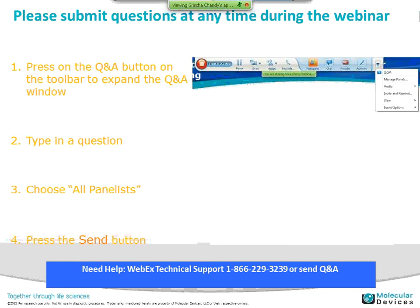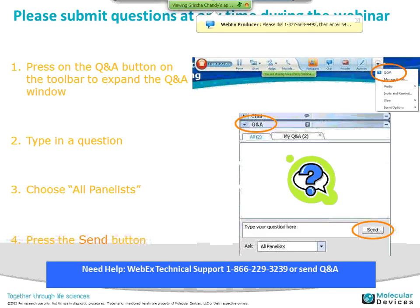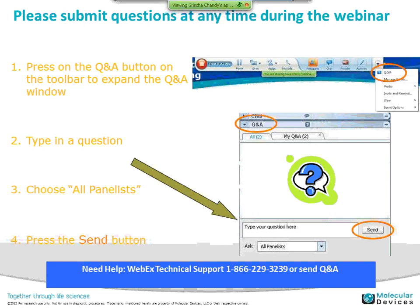How do you do Q&As? There should be a Q&A button on the toolbar at the top of your window. Select that and type a question into the question box. Choose all panelists so that all the panelists will see your question, and hit the send button.